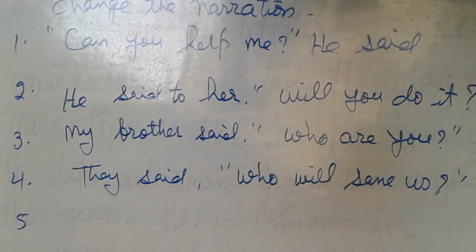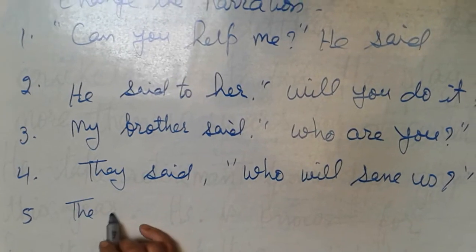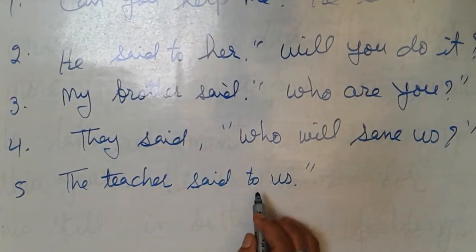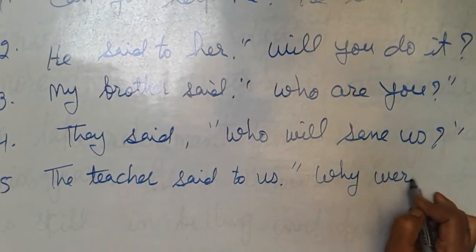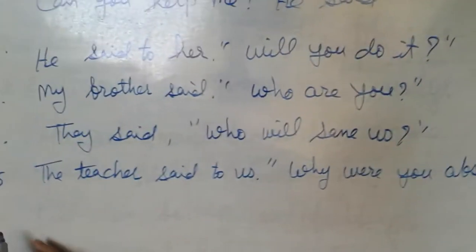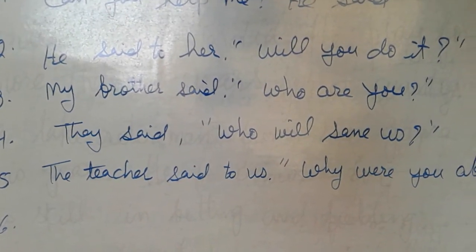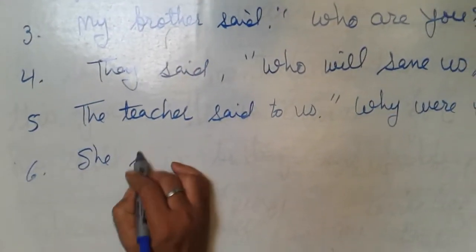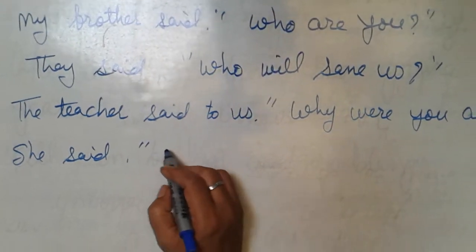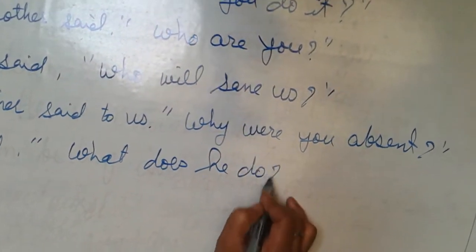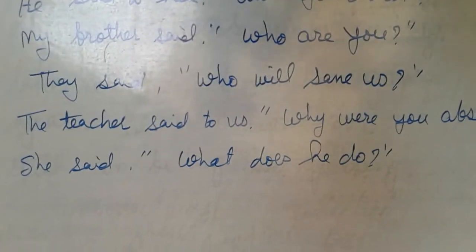Fifth question: the teacher said to us, 'Why were you absent?' Sixth question: she said, 'What does he do?' These questions are given to you. You have to do them.